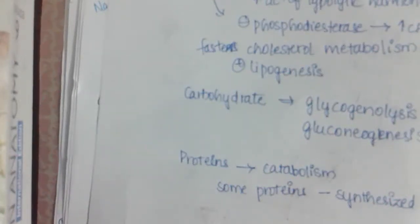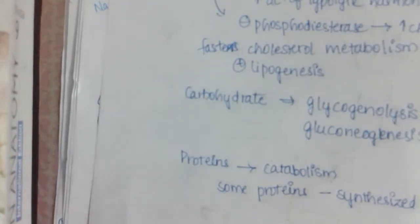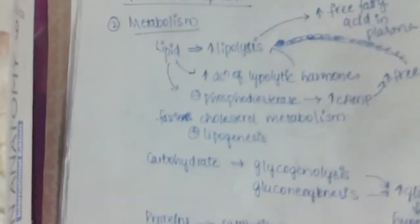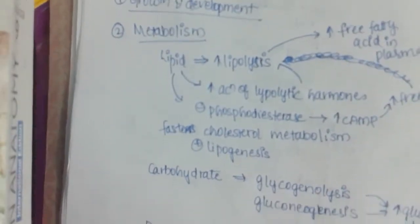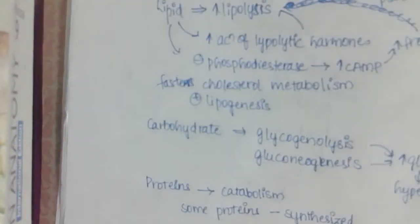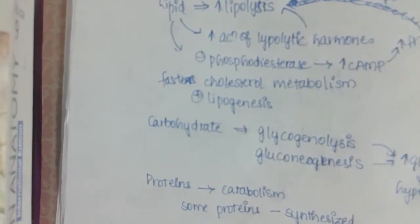In our previous class we learned about the mechanism of action of thyroid hormone and briefly dealt with two of its actions: growth and development, and metabolism. The overall effect is it increases the catabolism of lipids, glucose, carbohydrates, and proteins, increasing free fatty acids, glucose, and amino acids in the blood.